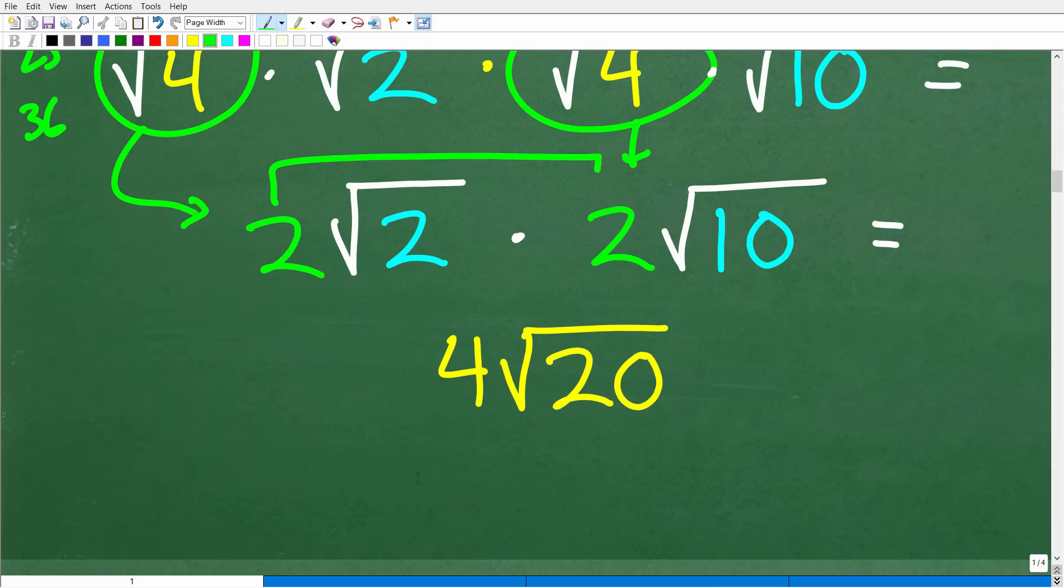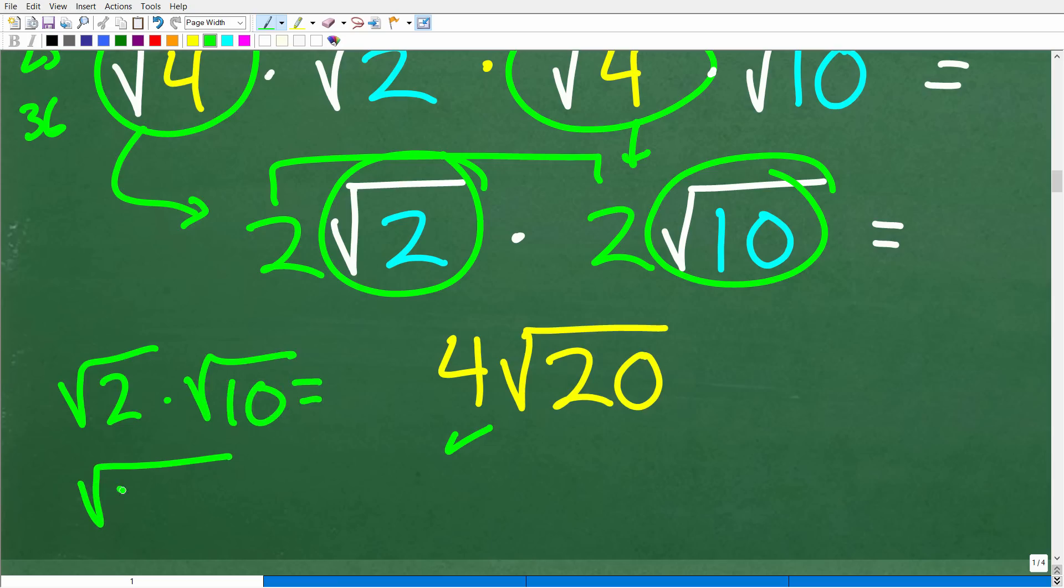Our final answer is going to be the following. We're just simply going to multiply the numbers. 2 times 2 is 4. And then here, we have a square root and a square root. So, the square root of 2 times the square root of 10 is equal to the square root of 2 times 10, which, of course, is the square root of 20. So, now we have 4 times the square root of 20.